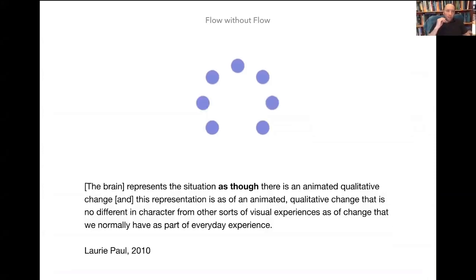So as she writes, the brain represents the situation as though there is an animated qualitative change. And this representation is as of an animated qualitative change that's no different in character from other sorts of visual experiences as a change that we normally have as part of everyday experience like the moving second hand on the clock.